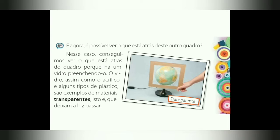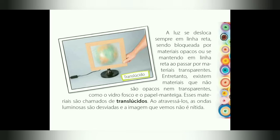Agora, é possível ver o que está por detrás deste outro quadro? Nesse caso, conseguimos ver o que está atrás do quadro porque há um vidro preenchendo-o. O vidro, assim como o acrílico e alguns outros tipos de plástico, são exemplos de materiais transparentes, isto é, que deixam a luz passar. Já o transparente, a luz consegue passar e nós conseguimos enxergar o que está por detrás do material. A luz se desloca sempre em linha reta, sendo bloqueada por materiais opacos ou se mantendo em linha reta ao passar por materiais transparentes.